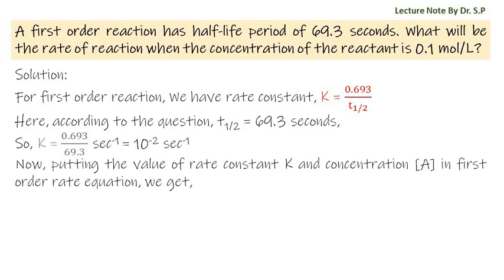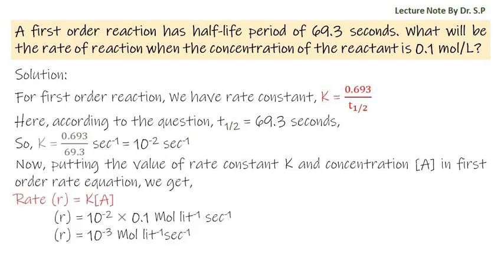Now, putting the value of rate constant K and concentration [A] in first-order rate equation, we get: Rate (r) = K[A].